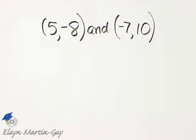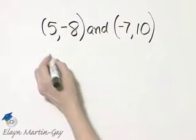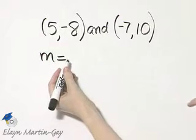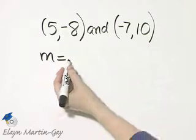Let's find the slope of the line that goes through these two points, and we will use the slope formula. m is equal to, remember it's the difference of the y's over the difference of the x's.